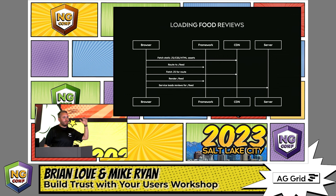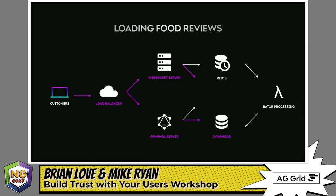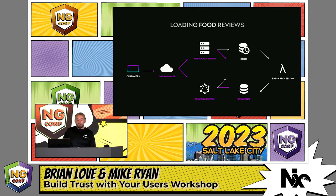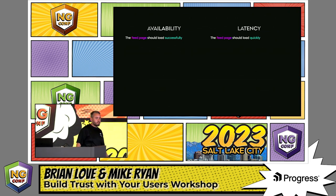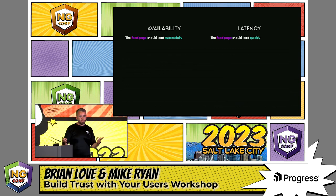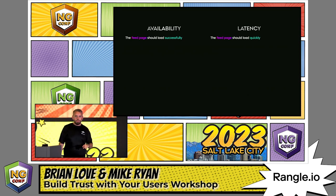If we map this user journey back to the system architecture, all the components impacted include the load balancer, WebSocket server, GraphQL server, DynamoDB, and all the JavaScript shipped to the browser needing to run correctly. There's a lot to test here. For this user journey, I'd recommend two SLOs — one based around availability and one based around latency. Availability means the feed page should load successfully, showing food reviews rather than an error card or infinite spinner. Latency means it should do so reasonably fast.